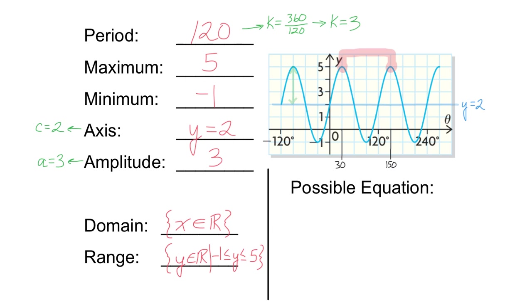To figure out our equation, a possible equation, we need to figure out our a, k, c, and d values. Remember, the period is not your k value. But if you divide 360 by your period, then you will get your k value. So in this case, k is 3.